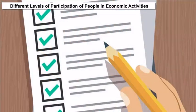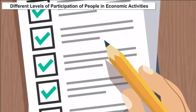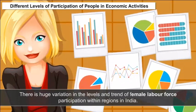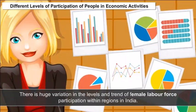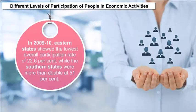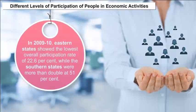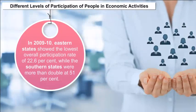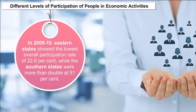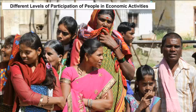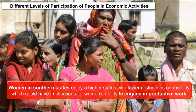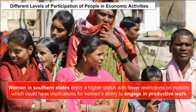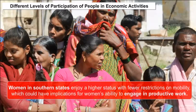There is a huge variation in the levels and trend of female labor force participation within regions in India. In 2009-10, eastern states showed the lowest overall participation rate of 22.6%, while the southern states were more than double at 51%. Women in southern states enjoy a higher status with fewer restrictions on mobility, which could have implications for women's ability to engage in productive work.